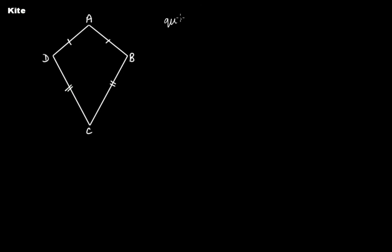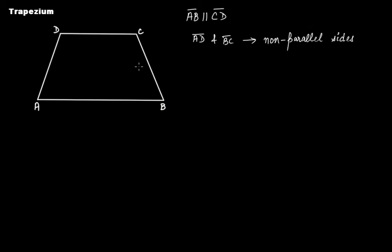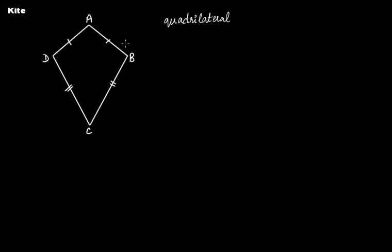Now we come to the kite. A kite has the shape of a kite. It is also a quadrilateral, but it is a special quadrilateral — just as a trapezium is a special quadrilateral, a kite is also a special quadrilateral.